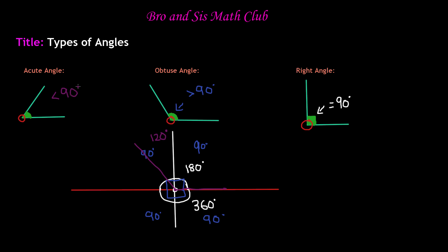So 90 degrees is greater than an acute angle. So right angle is bigger than an acute angle, and so is an obtuse angle.